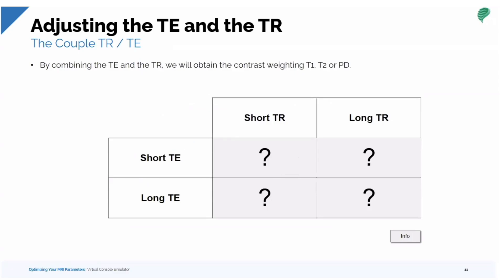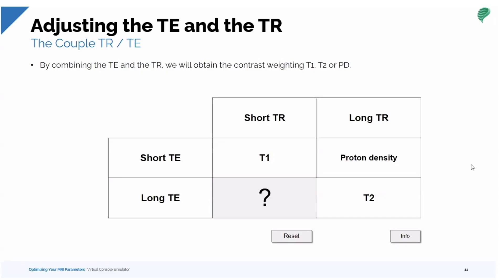The combinations of TR and TE create our contrast weighting. A short TR with a short TE gives T1 weighting. A long TE with a long TR gives T2 weighting. Combining a long TR with a short TE gives proton density weighting — our third most common tissue weighting in MR. A short TR with a long TE is not feasible; the short TR wouldn't give enough signal recovery for the long dephasing, so you really wouldn't get any signal, and therefore they're not done.